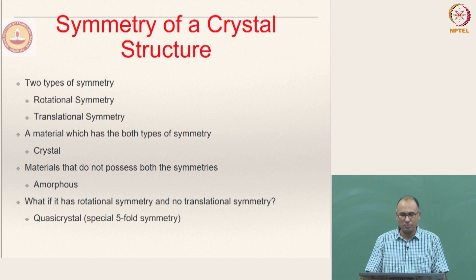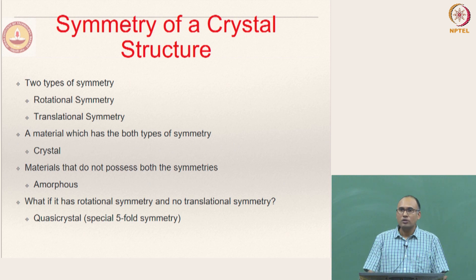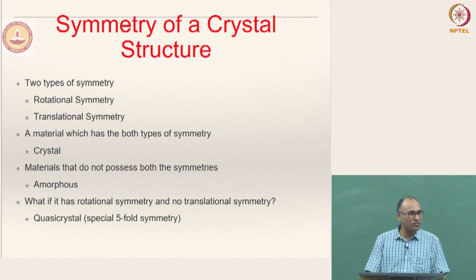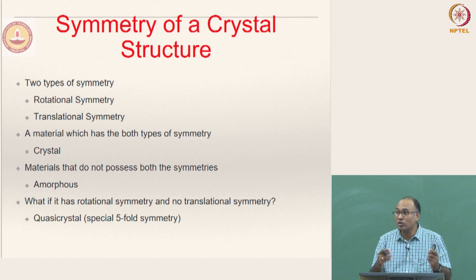There are two types of symmetries: one is called rotational symmetry and another one is translational symmetry. You will call something a crystal only when it possesses both rotational as well as translational symmetry — it should have both the symmetries.